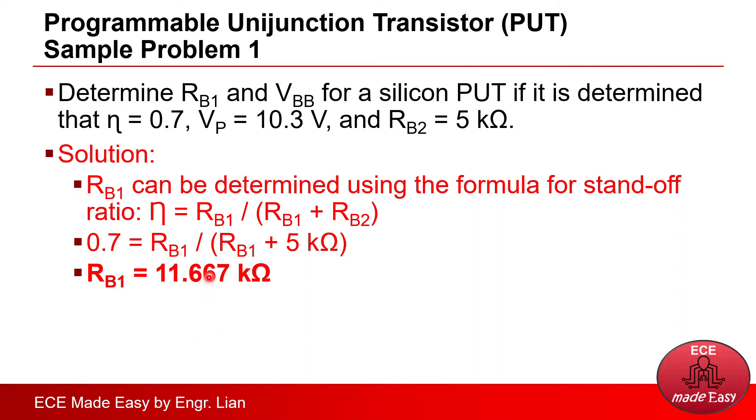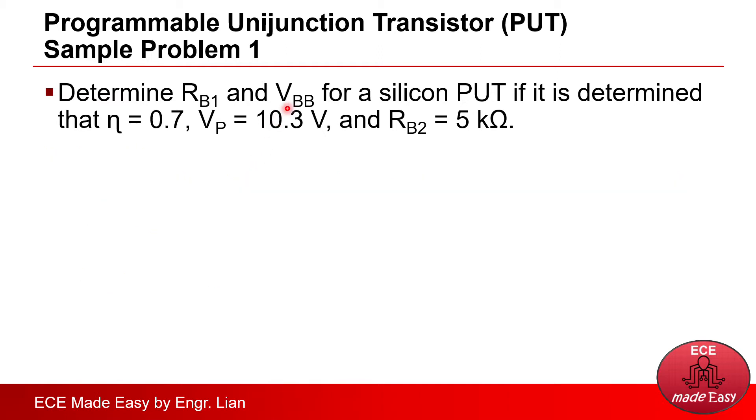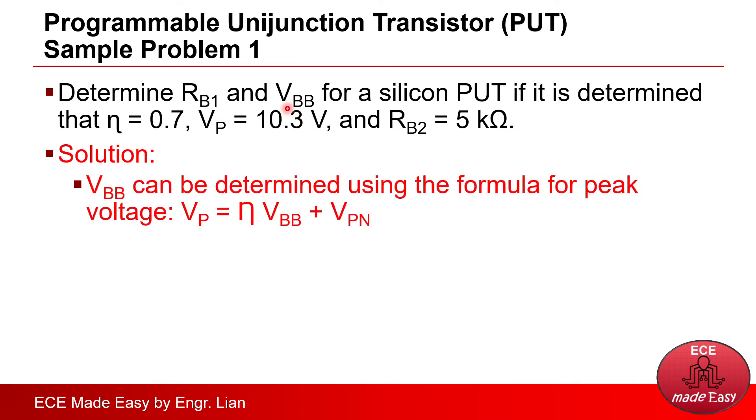Another thing that we need to determine is VBB. And to solve for VBB, it can be determined using the formula for peak voltage or VP, which is equal to eta times VBB plus VPN, or the voltage across the equivalent diode.